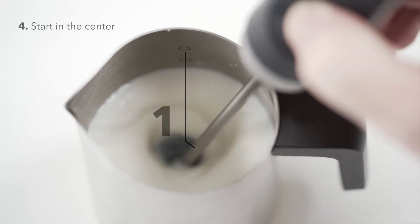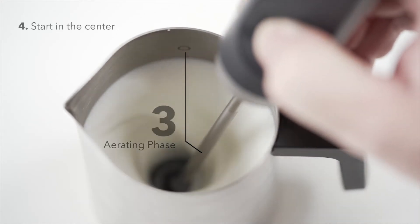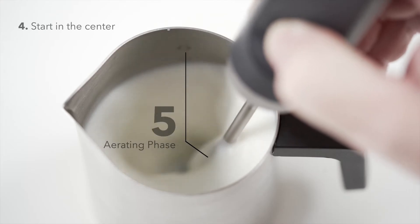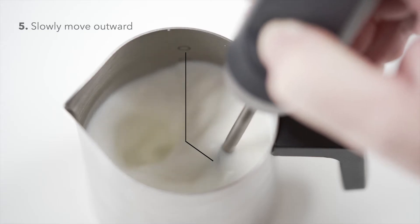Start churning in the center. This is the aerating phase where bubbles get incorporated. A few seconds is all it takes. The longer you hold in the center, the more air is incorporated.